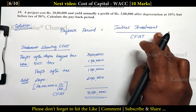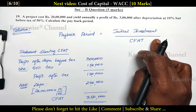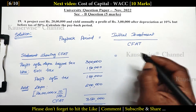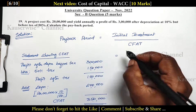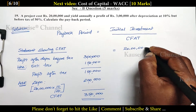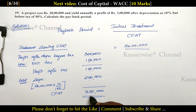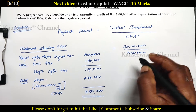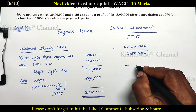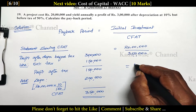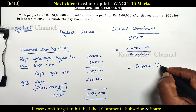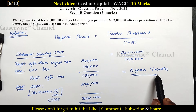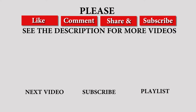Now we can substitute this value in the formula to find out payback period. The formula is initial investment divided by CFAT. Initial investment is 20 lakhs. 20 lakhs divided by CFAT of 3 lakh 50,000 equals 5.7 — that is 5 years 7 months. So the payback period is 5 years 7 months. This is the way to calculate payback period.